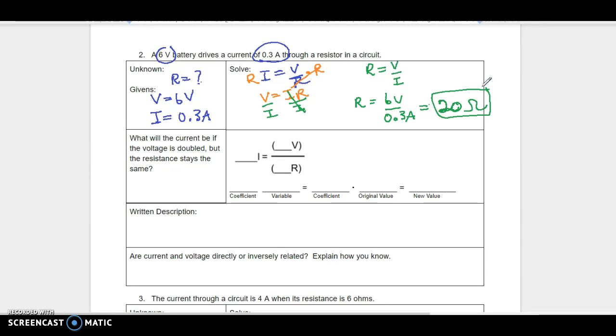All right, so that's to solve it. Now, what will the current be if the voltage is doubled, but the resistance stays the same? So I'm looking for the current. The voltage is going to be doubled, and the resistance is going to stay the same. So let's think about it in terms of the circuit. If the circuit is just as easy to get through as it was before, but the battery's pushing twice as hard, what's that going to do to the charges? They're going to go at twice the rate they did before.